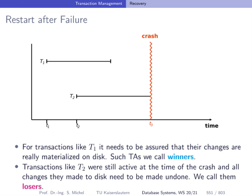We have transactions T1 and T2. T1 is called a winner transaction because it committed successfully before the crash happened — we must ensure its changes are incorporated into our persistent database as promised to the user. For loser transactions like T2, we must make sure that all changes they made to the persistent database are reverted, because that transaction was never committed.